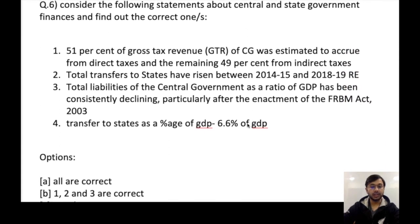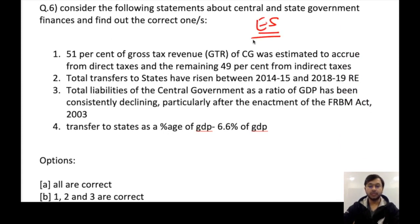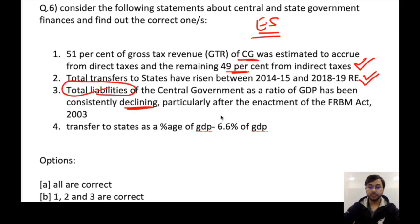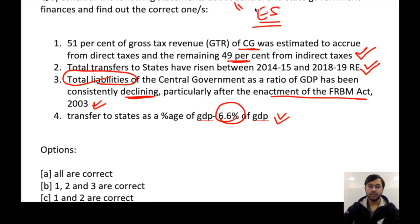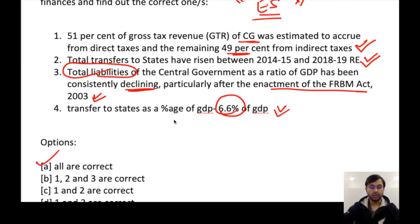Consider the following statements about central and state government finances and find out the correct one. 51% of gross tax revenue comprises direct taxes and 49% indirect taxes — correct. Total transfer to states has risen between 14 to 18 revised estimates — correct. Total liabilities of central government as a ratio of GDP have been consistently declining, particularly after the enactment of the FRBM Act — correct. Transfer to states as a percentage of GDP is 6.6% — also correct. Homework: go through the economic survey summary at least once if you are getting these answers wrong. Answer option is A — all are correct.